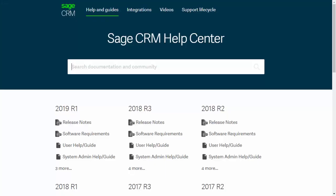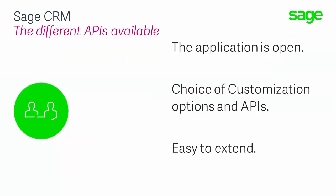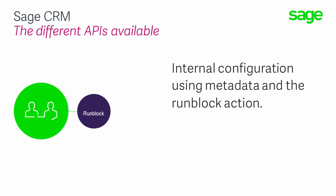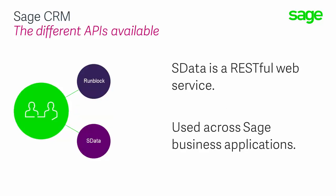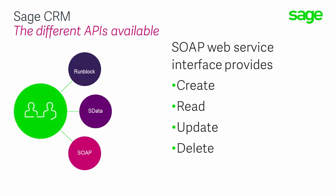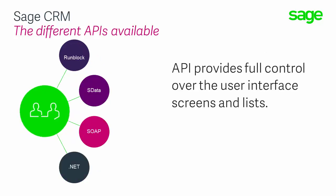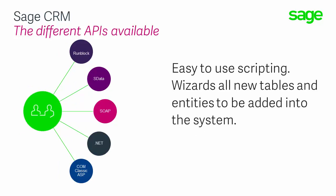We've been working very closely with each of the Sage country teams. The application is open — there are only a few areas of the product to which we are not given complete control, and you have a choice of APIs and development tools you can use. These range from internal configuration using metadata and the run block action — essential for doing anything with mobile, phone and tablet interfaces and the RESTful sdata interface. We'll also be discussing the SOAP web services interface, the .NET API, COM variants, and we'll be looking at the differences between table level scripts and ASP pages.